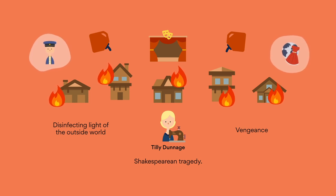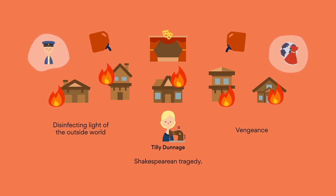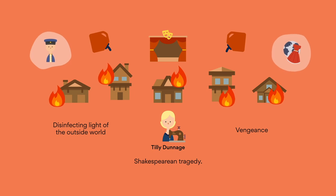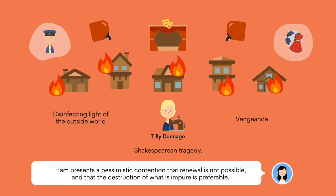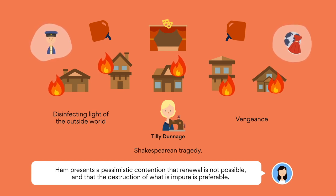The Dressmaker's end is utterly disturbing, yet it also reflects decades of internalized pain, trauma, and vilification being enacted on a town which has been rotten to the core. Ultimately, Ham presents a pessimistic contention that renewal is not possible and that the destruction of what is impure is preferable.